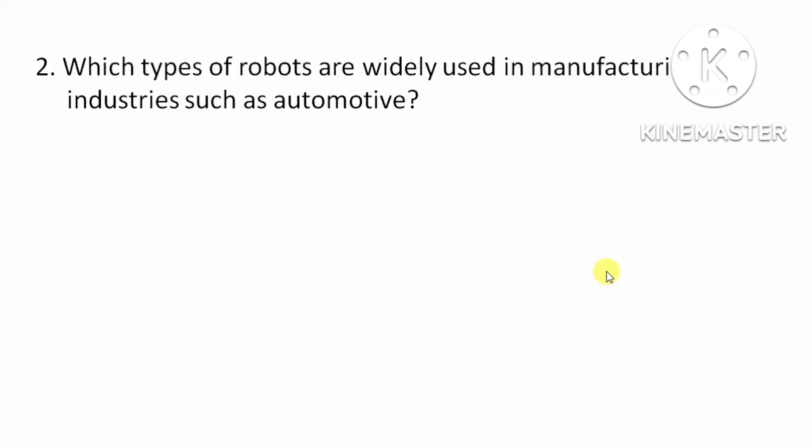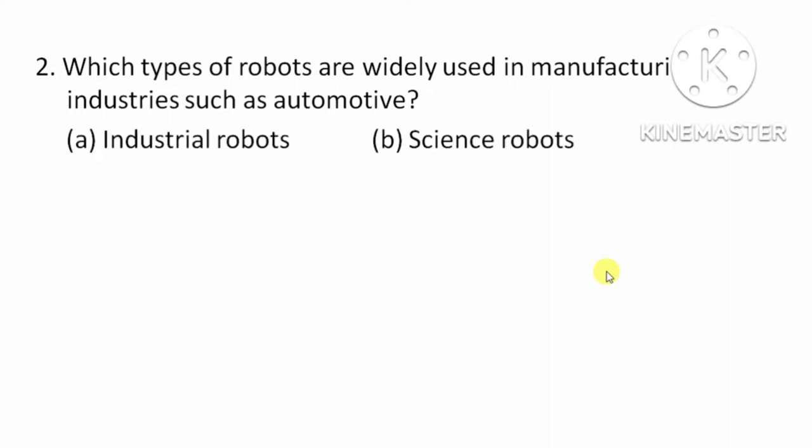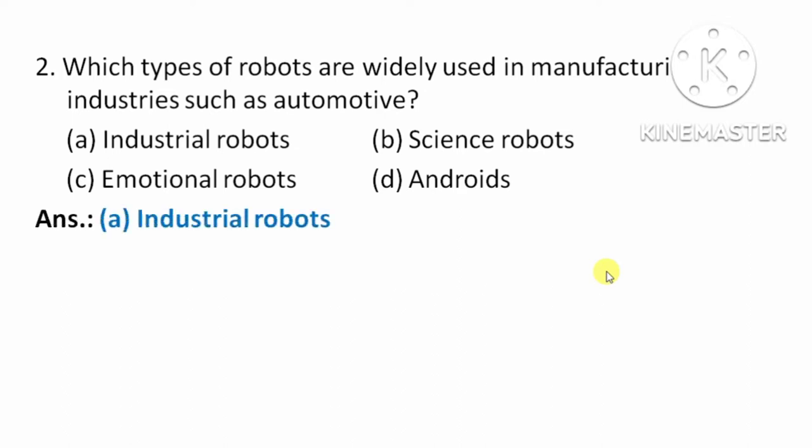Next question: which types of robots are widely used in manufacturing industries such as Automotive? Means, which concept of robot is used in the manufacturing industry? Option A: Industrial Robots. Option B: Science Robots. Option C: Emotional Robots. Option D: Androids. The right answer is Option A, Industrial Robots.